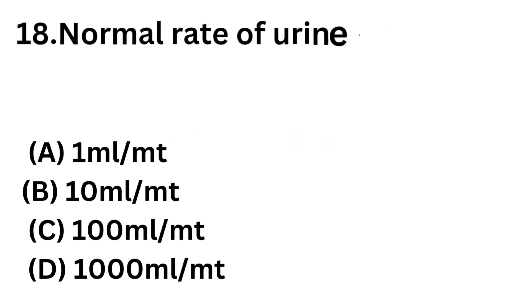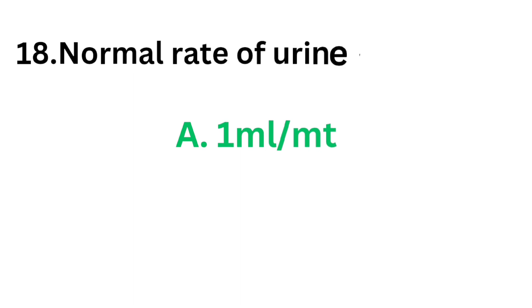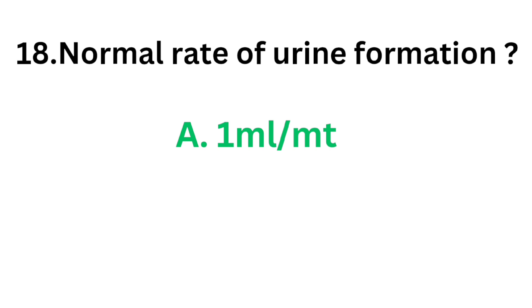Question number 18: Normal rate of urine formation. Option A: 1 ml per minute. Option B: 10 ml per minute. Option C: 100 ml per minute. Option D: 1000 ml per minute. The correct answer is Option A: 1 ml per minute. Normal rate of urine formation is 1 ml per minute.